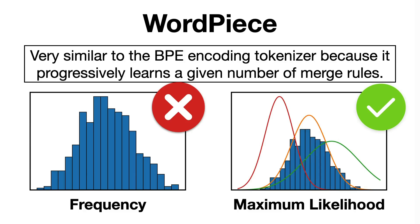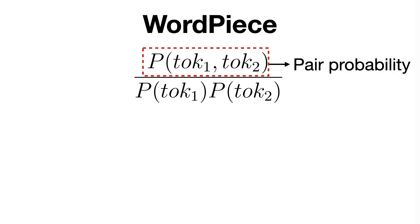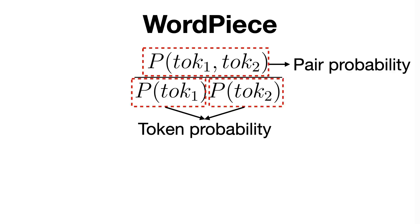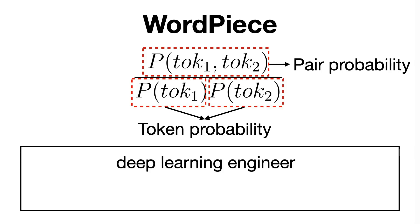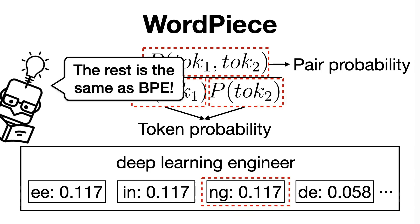So what does this mean more exactly? Referring to the previous example, maximizing the likelihood of the training data is equivalent to finding the token pair whose probability divided by the probabilities of its first token followed by its second token is the greatest among all token pairs. And if we were to compute that, we would obtain the following probability and pick either the EE or INC pairs, or due to the way probabilities work here, the NG pair, since it also has the highest likelihood. The rest of the algorithm is the same as in the BPE tokenizer — the only difference being that we replace the merging criterion from frequency to maximum likelihood.